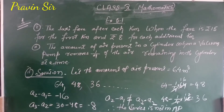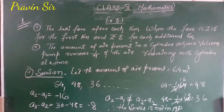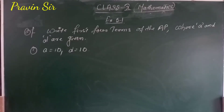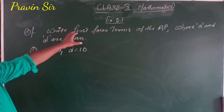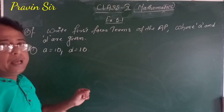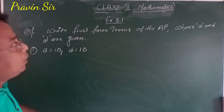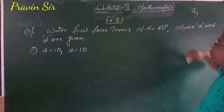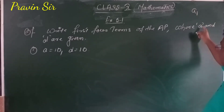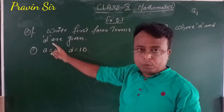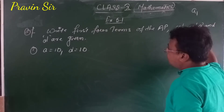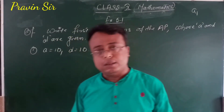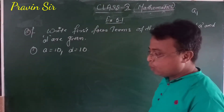Now we will see question number two of Exercise 5.1: Write the first four terms of the AP where A and D are given. A means the first term and D means the common difference. Remember, if you know the first term and the common difference, we can make a series very easily. In the coming questions you have to form a series, and the main things needed are the first term and D.